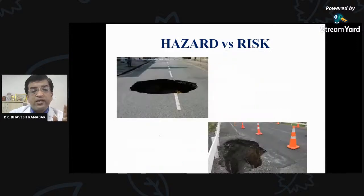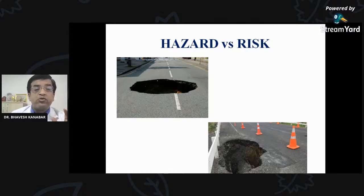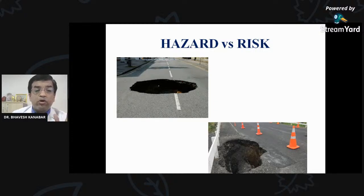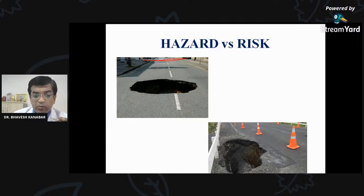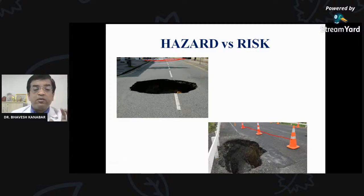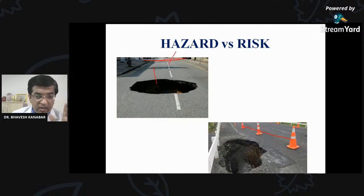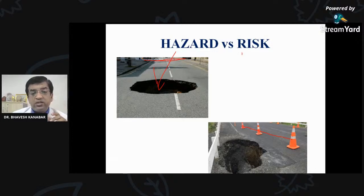To understand with an example: suppose there is a hole in the road — the presence of this hole is a hazard. There is always a risk that a person may fall in unknowingly. But you can notice that the hole has been barricaded — there is a barrier. This barrier decreases the risk of any person or vehicle falling into this potentially hazardous source. So the hole is the hazard, and the barrier decreases the risk.